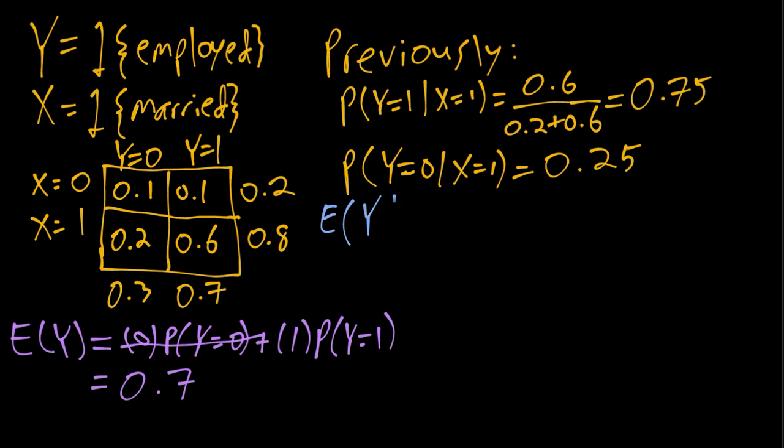So here the conditional mean of y given x equals one is analogous to before where we have value times probability and sum them together. Just this time the probabilities will be conditional probabilities. Basically we're just looking at this married subpopulation and then doing everything within that subpopulation. So here again same two possible values, 0 and 1.